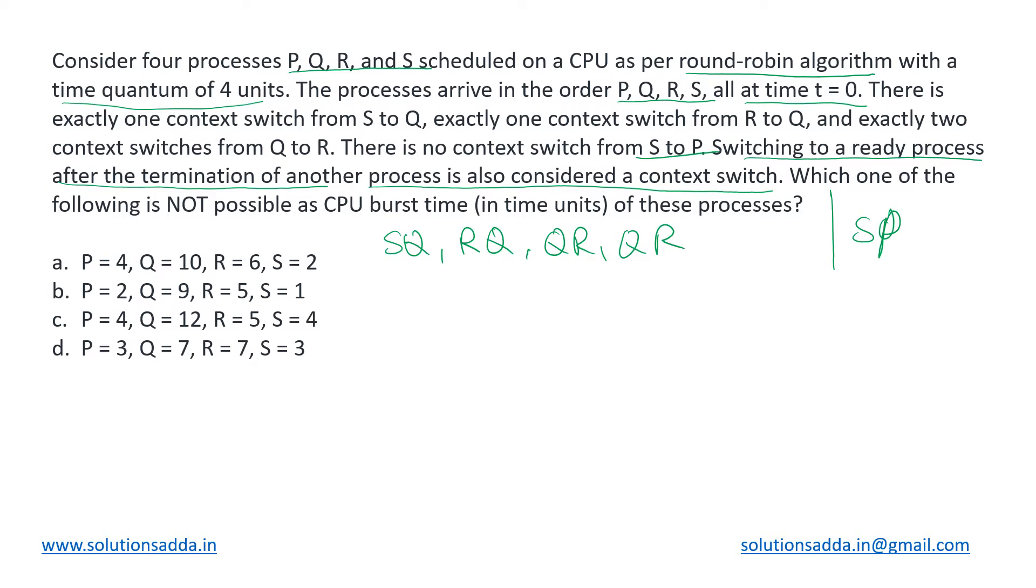Even if one process has completed its execution and then another is there in the queue which is going to be scheduled next, then we count that to be a context switch as well. Now which of the following is not possible as the CPU burst time for these processes? In these options we have been given burst times of all the processes and using that we need to determine which of them is not possible given the scenario. Let us look at option A.